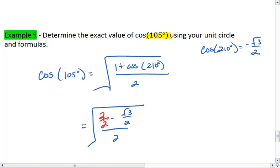This gives us 1 minus root 3 over 2 over 2, all square rooted. Again, I'm going to change this 1 into a 2 over 2, so that we can write this as 2 minus root 3 all over 4, square rooted.